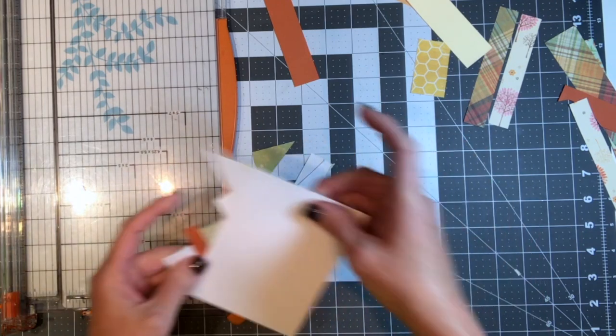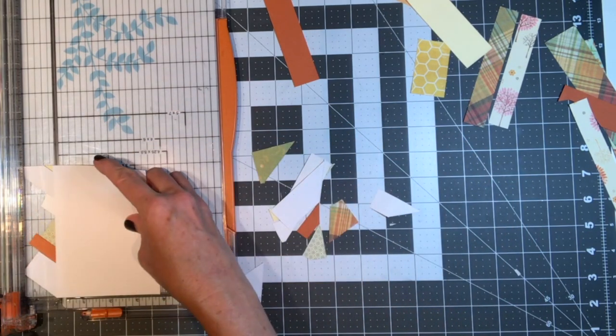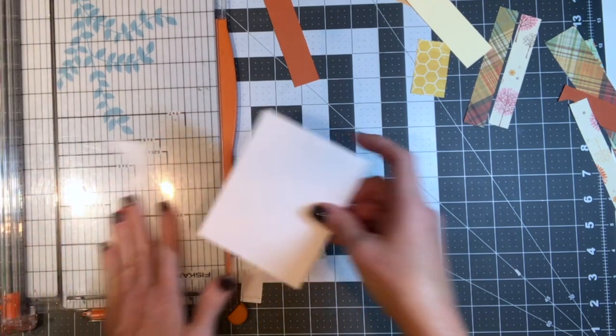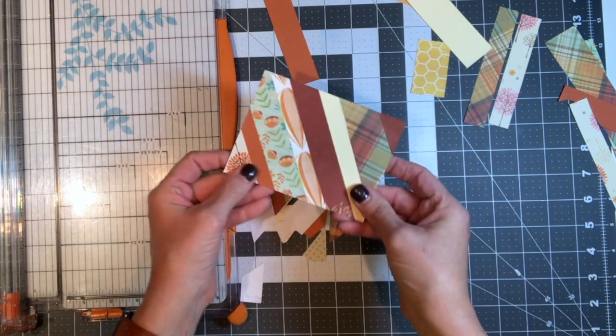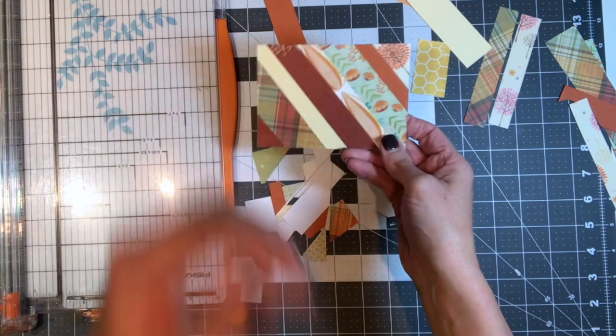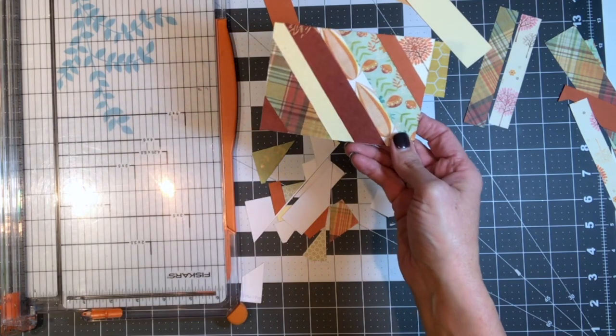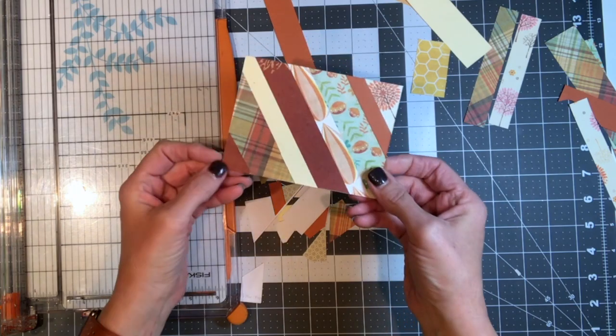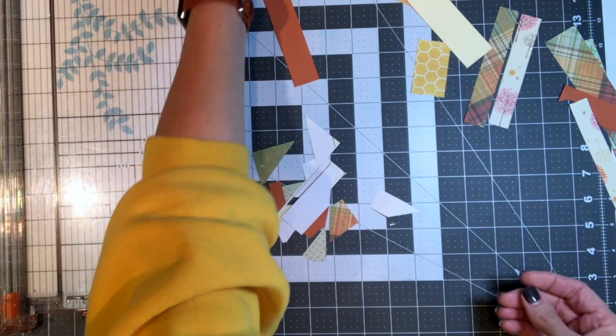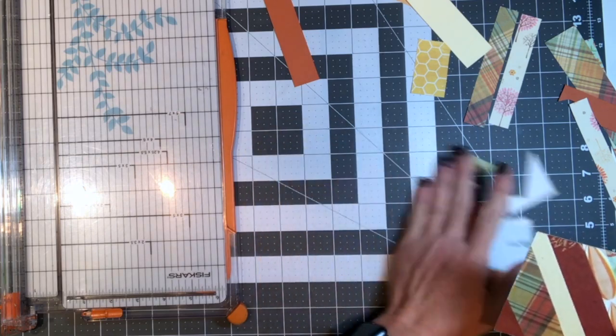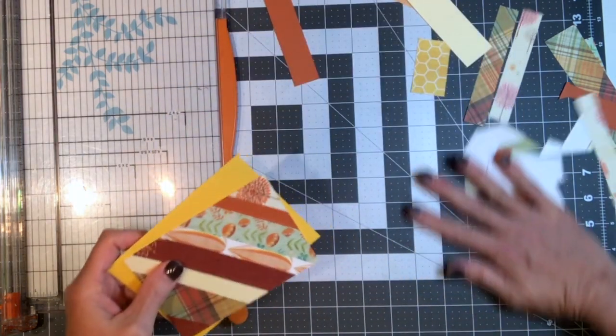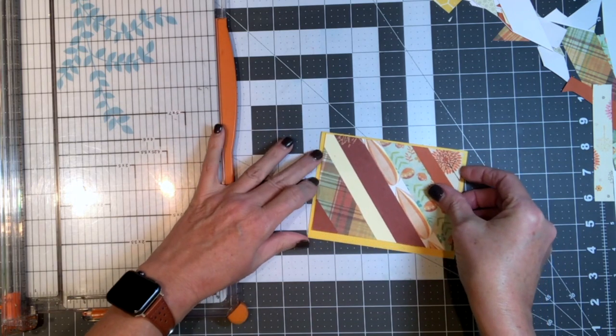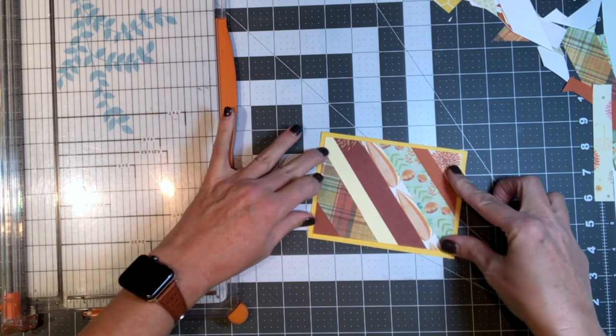And then what you're left with is a beautiful background for just about anything. You could put a sentiment on the front of it. You could put a little picture on the front that maybe you colored with Copics. You could just do as little or as much with it as you'd like to do. I'm actually going to mount mine on that yellow piece of card base that I had showed you in the beginning of the video. And I'm going to leave a little bit of the yellow edge showing around just to add some interest to it.